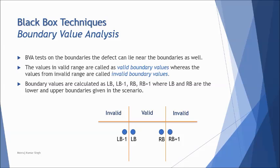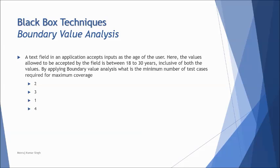Let's quickly move to the example here and understand what we are talking about. A text field in an application accepts input as the age of the user. Here the values allowed to be accepted by the field is between 18 to 30 years inclusive of both the values. Now ISTQB will make sure that the question is very clear to you so that you don't get confused.